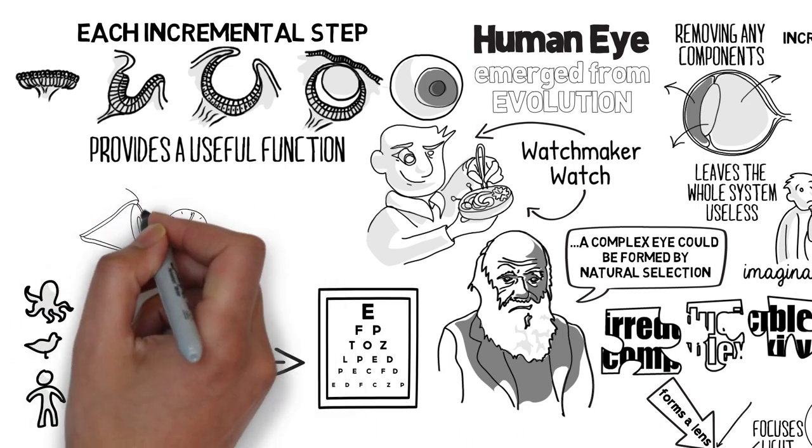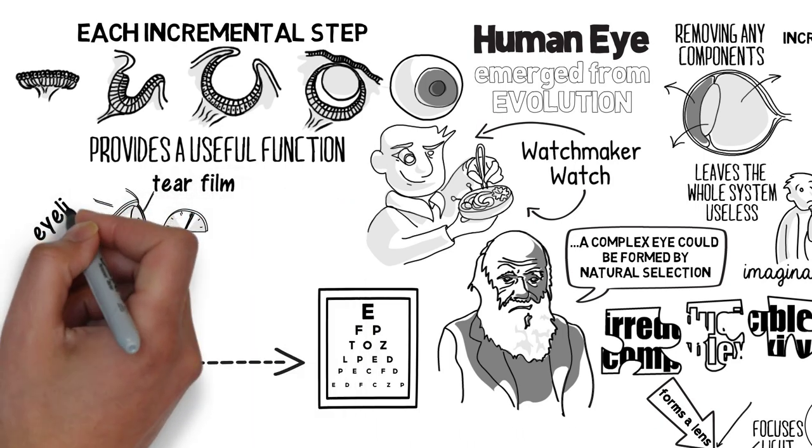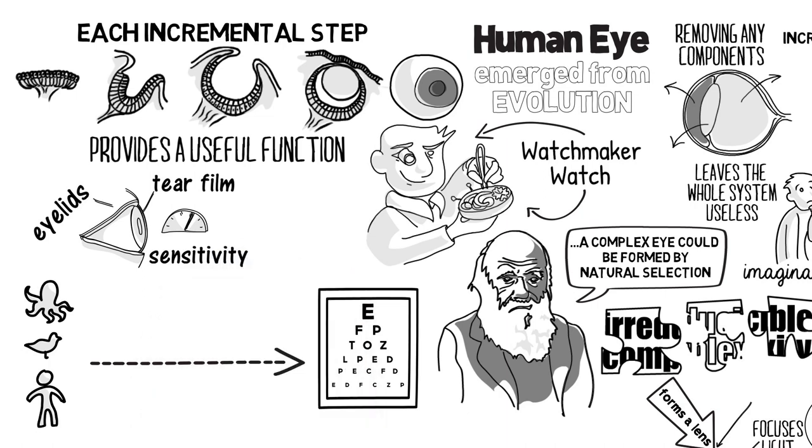The development of protection mechanisms like tear film, eyelids and sensitivity levels were crucial steps in the evolution of the human eye.